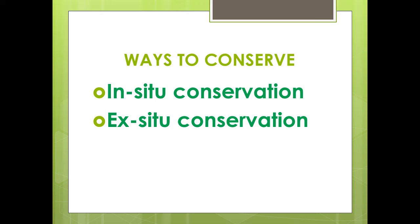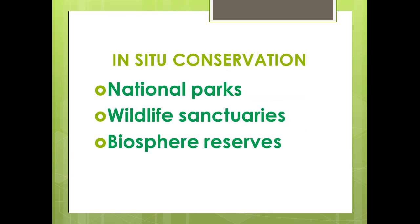Protected areas where in-situ conservation takes place include national parks, wildlife sanctuaries, and biosphere reserves. National parks are small reserves maintained by the government with well-demarcated boundaries. Human activities such as grazing, forestry, habitat modification, and cultivation are prohibited. Examples include Kanha National Park and Bandipur National Park.